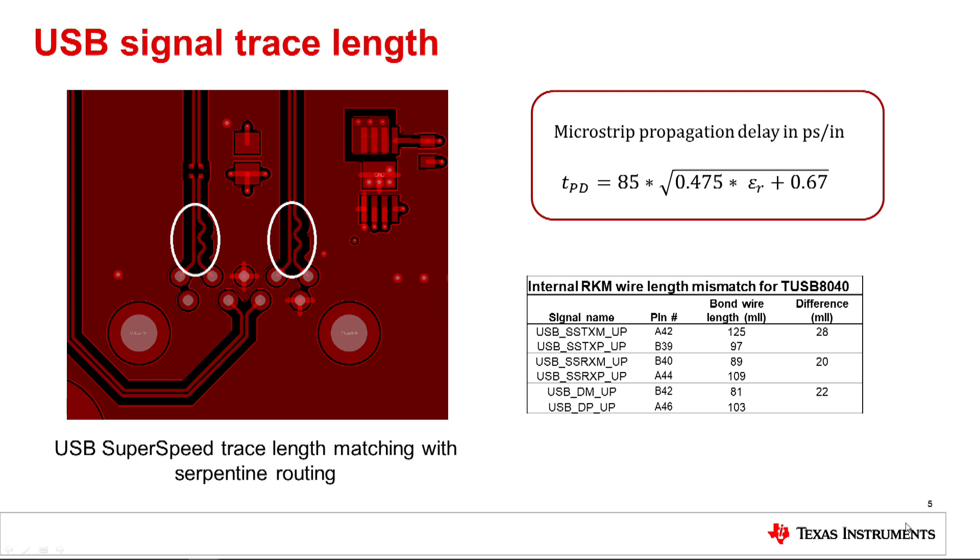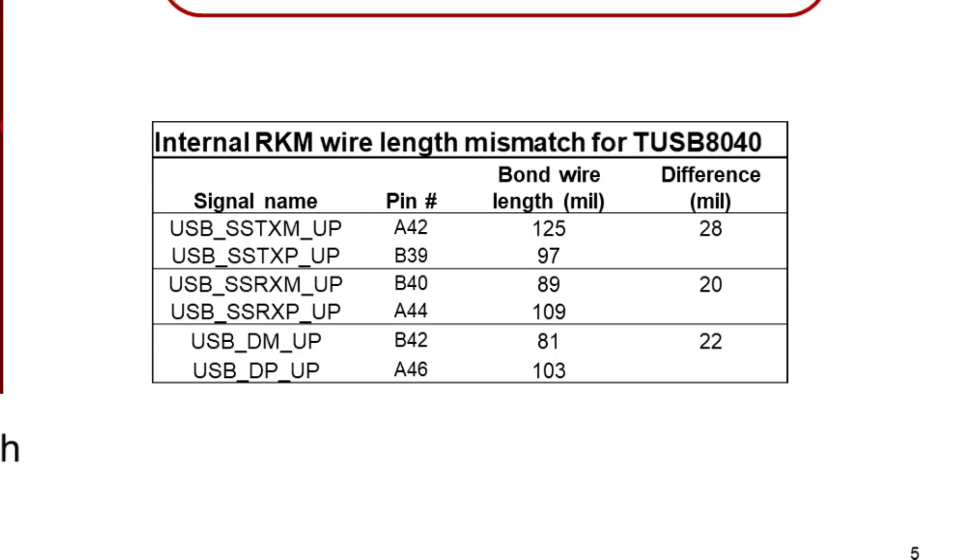This is negligible for USB 2.0 signals, which have a unit interval of 2.08 nanoseconds, and 8 picoseconds for 5 mils of mismatch for USB 3 signals, which have a UI of 200 picoseconds for Gen 1. For faster signals, internal bond wire mismatches may also need to be taken into account. In the table shown, the mismatch must be taken into account for USB 3 5G signals, but is inconsequential for USB 2.0 signals.